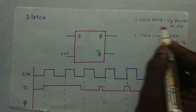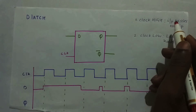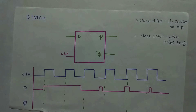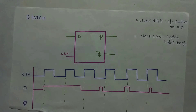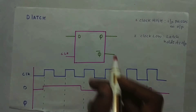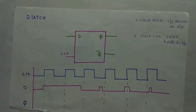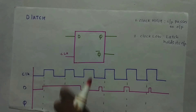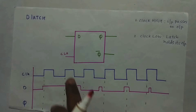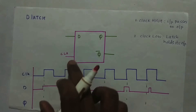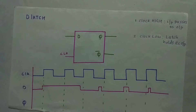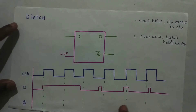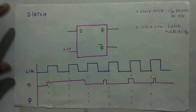Whenever the clock is high we need to pass input to output. Whenever the clock is low we need to latch and hold its output. This is how a latch looks — there's no arrow symbol. Don't forget there's no arrow symbol, and it's a positive one, not negative. For a negative latch we will have a complement bubble on the clock input.